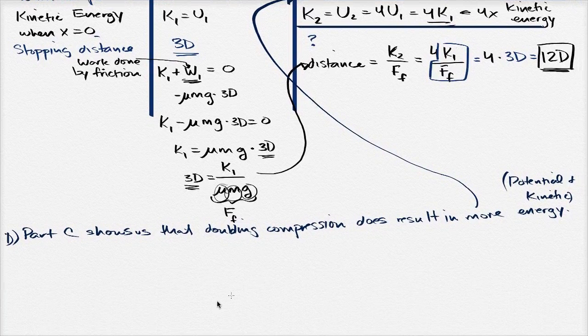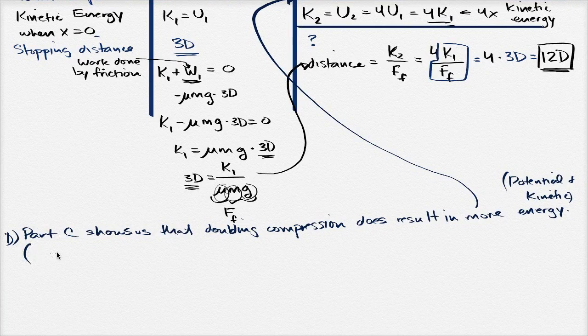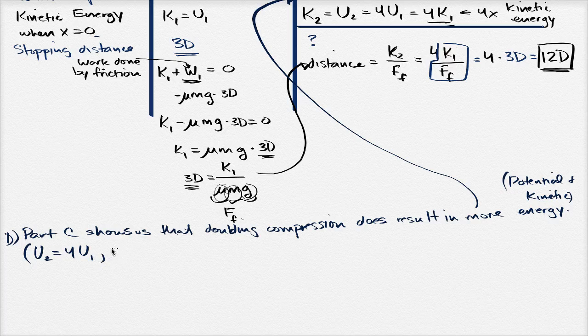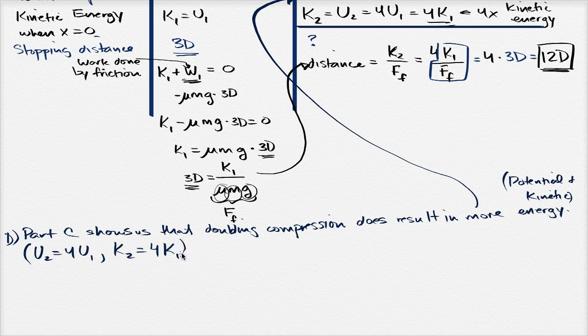And just to make it clear, I can put in parentheses, I can show that U2 is equal to 4U1, and that K2 is equal to 4K1.